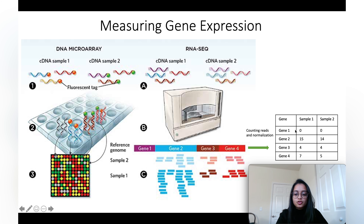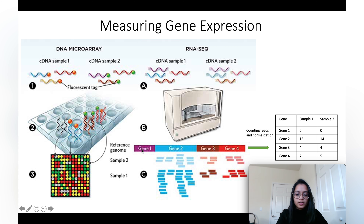In the count matrix, the rows are genes and the columns are samples, and the numbers correspond to the reads that map to the genome. For example, no reads from sample 1 and sample 2 map to gene 1, so the row corresponding to gene 1 for both samples has a value of 0.